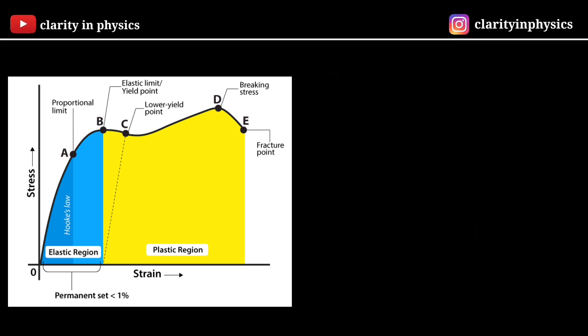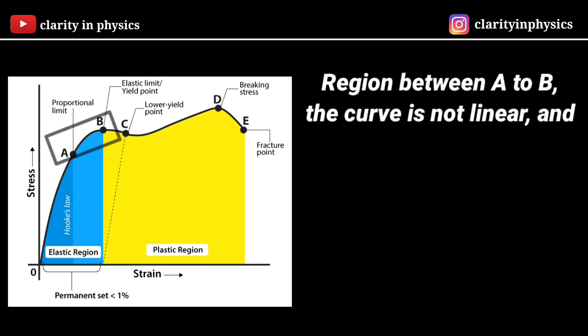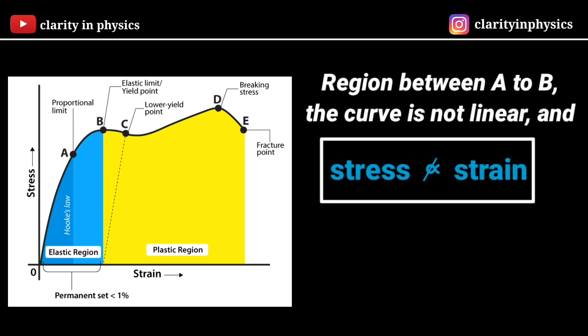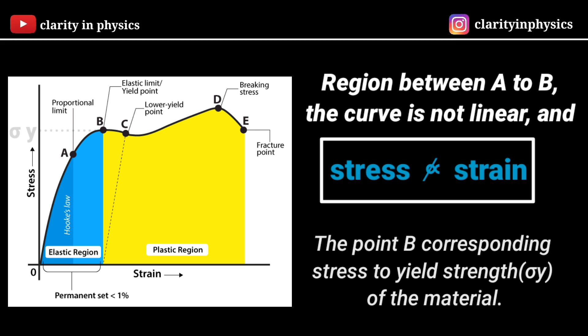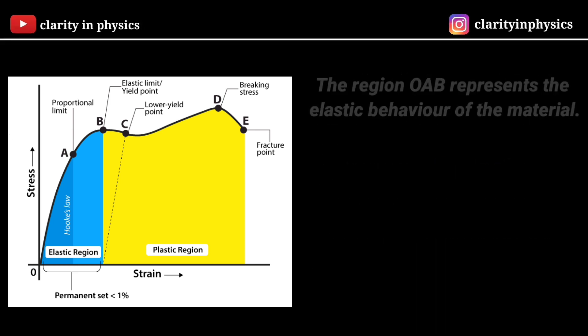In the region from A to B, stress and strain are not proportional. The body still returns to its original dimensions when the load is removed. The point B in the curve is known as the yield point, also known as elastic limit, and the corresponding stress is known as yield strength of the material. The region O, A, B represents the elastic behavior of the material of the spring.